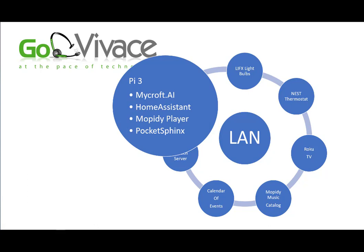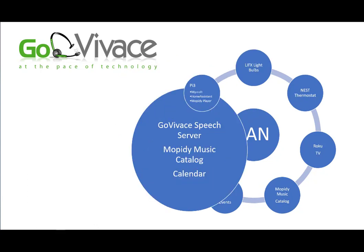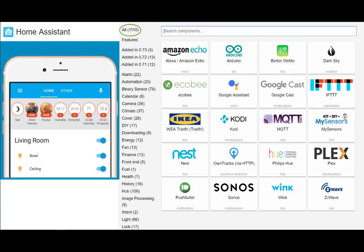which is used for hot word detection. On the Windows 10 PC is the Go Vivace speech server, the Mopidy music catalog holding all the MP3s that I can play when I ask Mopidy to play some music, and my calendar so it can find out what events are happening on a specific day. Home Assistant has the ability to connect to over 1,115 different objects in your room.